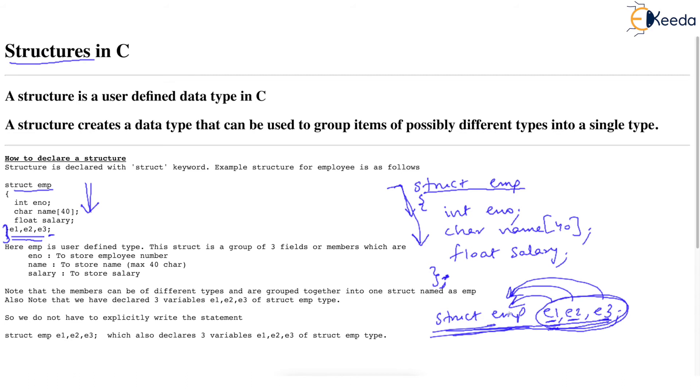five variables of this type. E1, E2, E3 or you can continue this line saying after close brace, you can say E1, E2, E3 are three variables. End it with semicolon now. End it with semicolon. E1, E2, E3 are three variables of this EMP type.